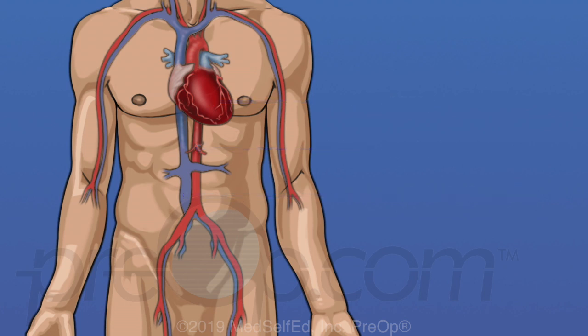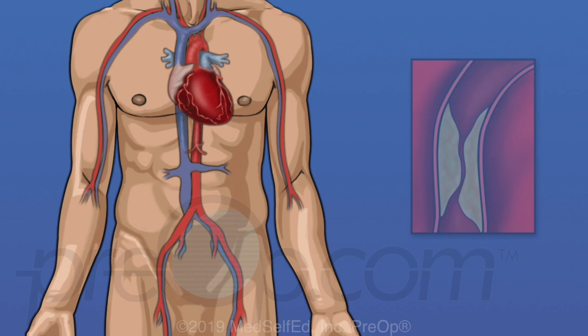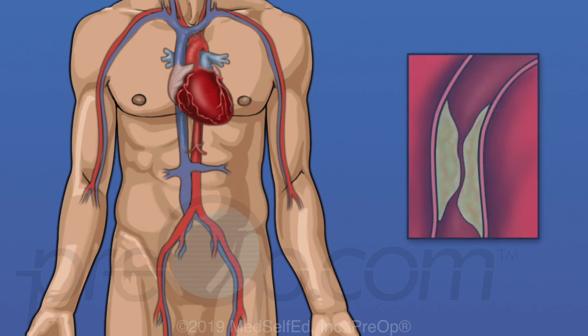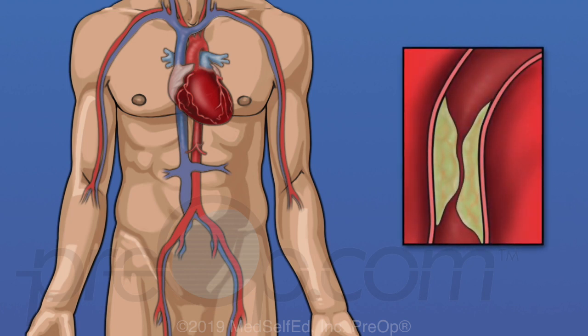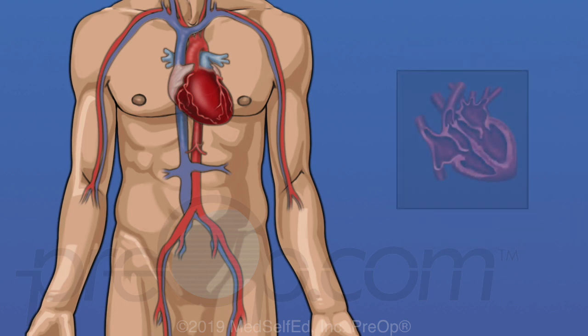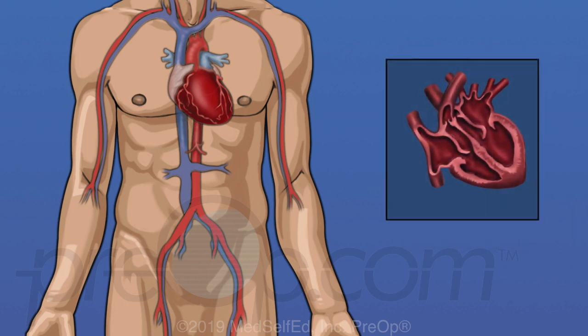During a cardiac cath, your cardiologist will test how well your heart muscle is working. The arteries that carry oxygen to the heart are examined and blocked arteries can be identified. The inside of the heart, the walls and important flaps called valves, are checked for problems.